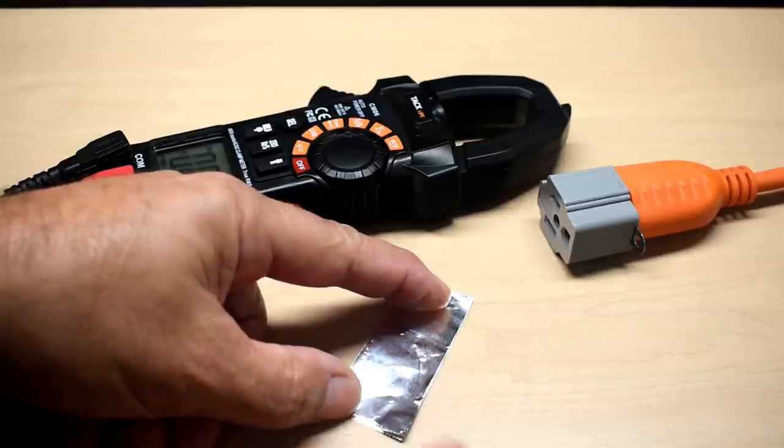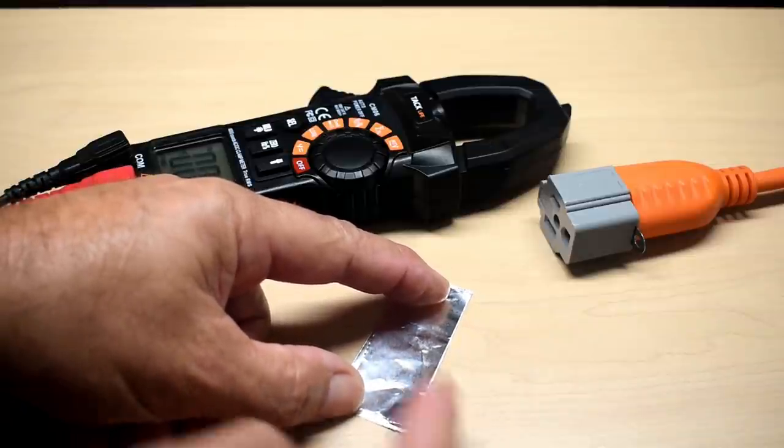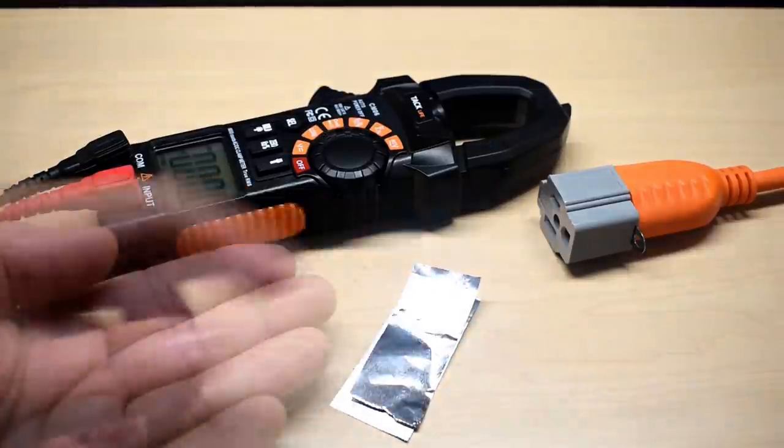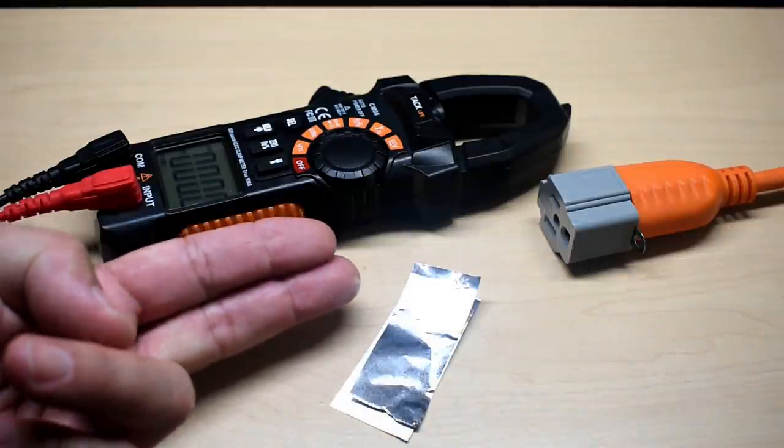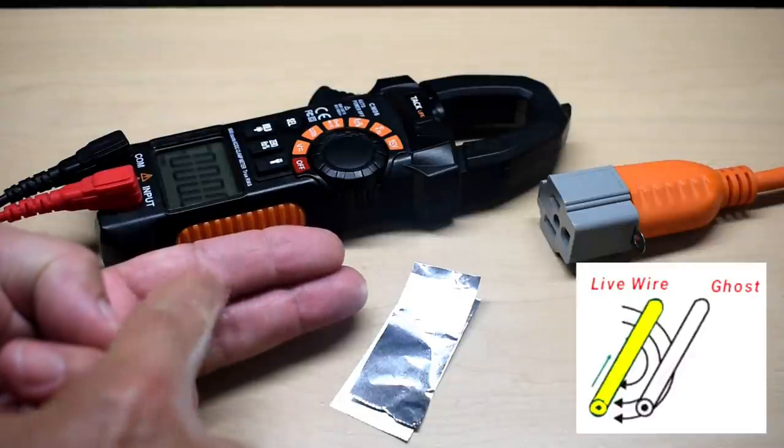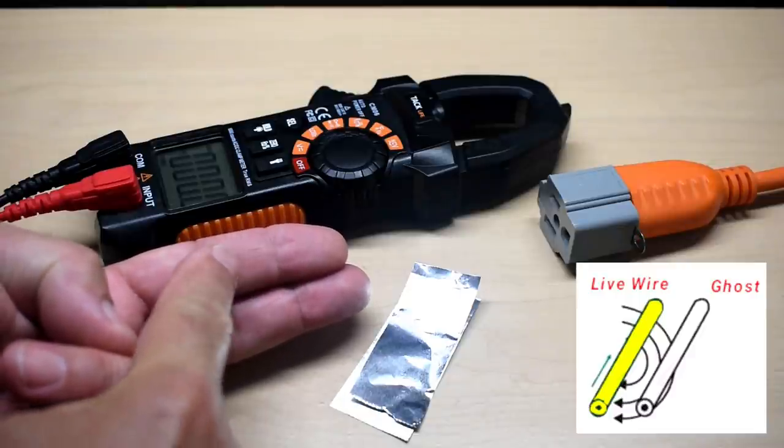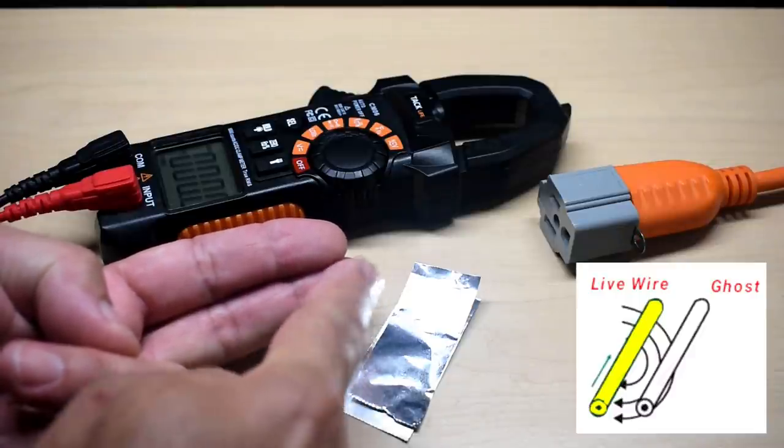So if there was a charge on the plate on the bottom side it would transfer to the top side and it's the same way when you have two wires very very close together with current flowing, currents could be induced into this wire from the live wire that's next to it.